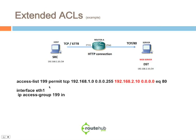Here's another way we can do it. From the destination portion, instead of using 'host 2.10,' we can reflect all zeros as the wildcard mask. Zero means we check each octet, and one means we ignore it. In this case, we're checking all four octets, which is the same as saying 'host 192.168.2.10.' Another thing we can do is enable 'log' at the end of a policy entry. If logging is enabled on your router, whenever there's a match for that particular entry, it will log it — whether to the buffer or to a syslog, depending on how things are configured.